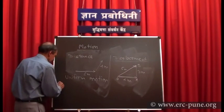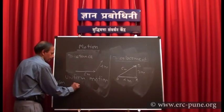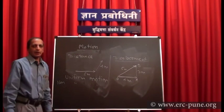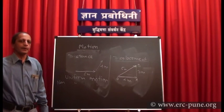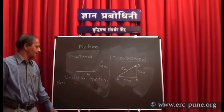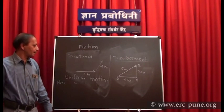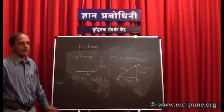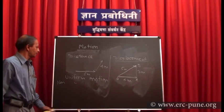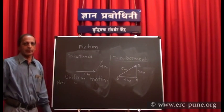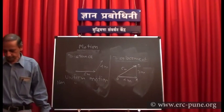Non-uniform motion: if a body covers unequal distance in equal intervals of time, howsoever small the time interval may be, then it is called non-uniform motion. So uniform motion means equal distance in equal time intervals; non-uniform motion means unequal distance in equal time intervals.